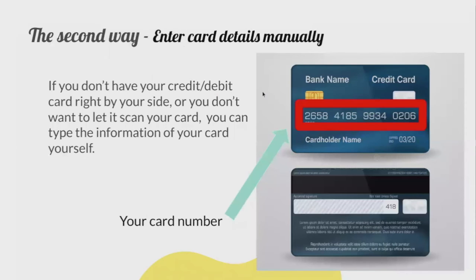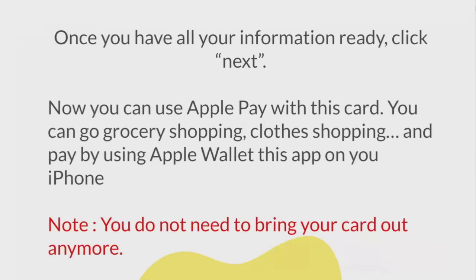The second way is to enter your card details manually — input the card number, your name, and the security code yourself. This is useful if you don't want the card scanned or don't have your physical card with you. Once you have all your information entered, simply click Next and you can now use Apple Pay with this card for grocery shopping, clothes shopping, and more — without needing to bring your physical card.